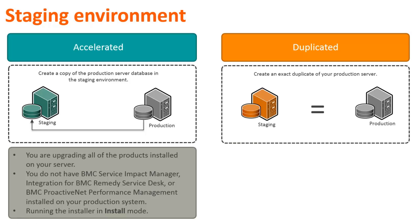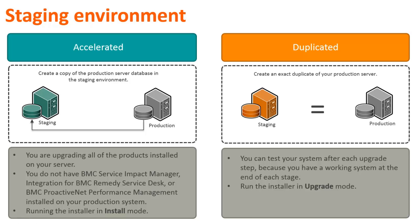To create a duplicated staging server, you must create an exact duplicate of your production server. You must also include any other applications that you have on your production server, such as BMC Service Impact Manager, Integration for BMC Remedy Service Desk, or BMC Proactive Net Performance Management before starting the upgrade. If you set up the staging server in this way, you can test your system after each upgrade step because you have a working system at the end of each stage. After preparing the staging server, to upgrade the components to the latest version, you must run the installer in the upgrade mode.